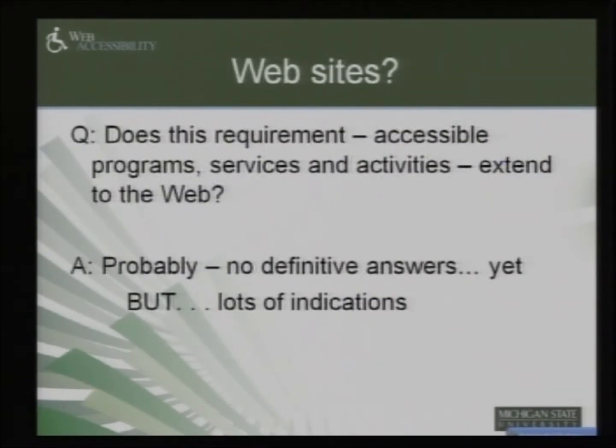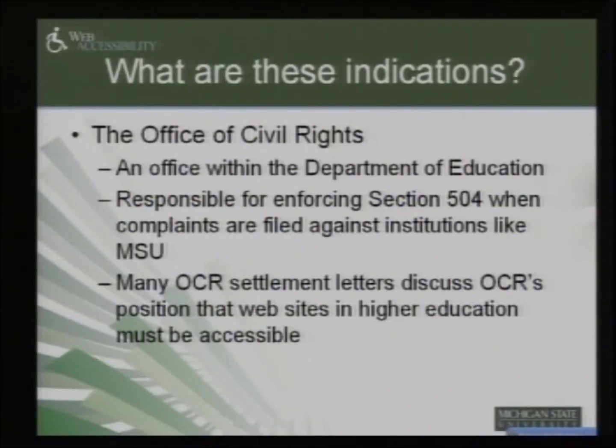What about websites? Does this requirement cover websites? The answer is probably no definitive answers yet — lots of indications. It's a developing area. The law is trying to play catch up with technology. We have a good set of standards under Section 508. But with respect to the specific statutes we're covered by, we don't have a specific requirement yet that explicitly names websites — just this broader equal access to programs and services. What are the indications that make us think we'd better get ahead of the game and make sure we are accessible with respect to the web?